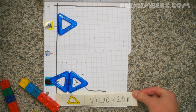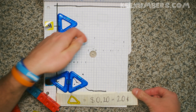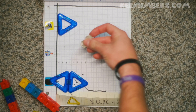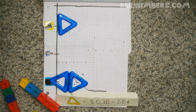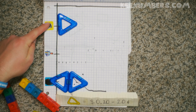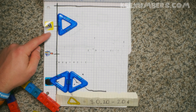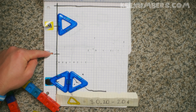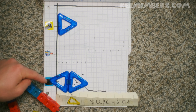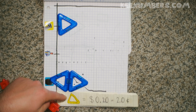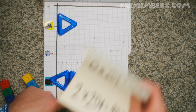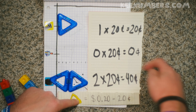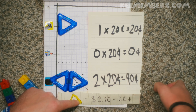Here we have an example with triangles — each triangle is worth 20 cents, which is two dimes in the United States because a dime is worth ten cents. If pirate Sam has one triangle, that's worth twenty cents. I have no triangles, so that's zero cents. The greater gator has two triangles and each is twenty cents, so two times twenty is forty cents.